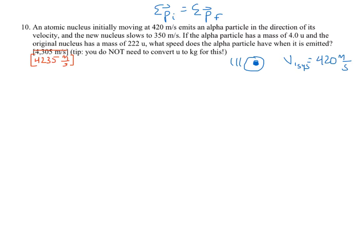So this alpha particle is part of the atomic nucleus, but at some point the atomic nucleus kicks out this particle. The new nucleus without the alpha particle slows down to 350 meters per second. What we want to find out is the final velocity of the alpha particle — that's what we're solving for.